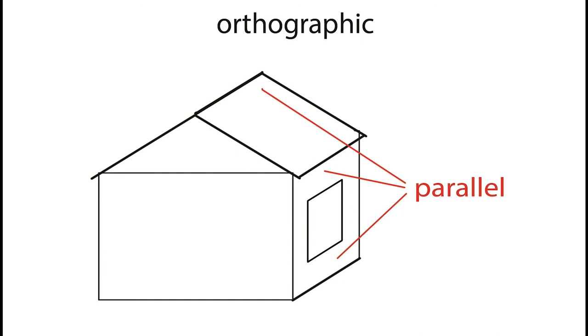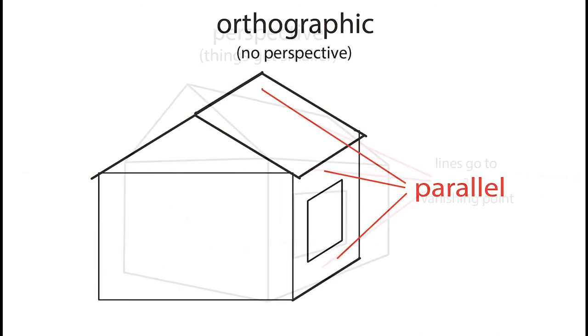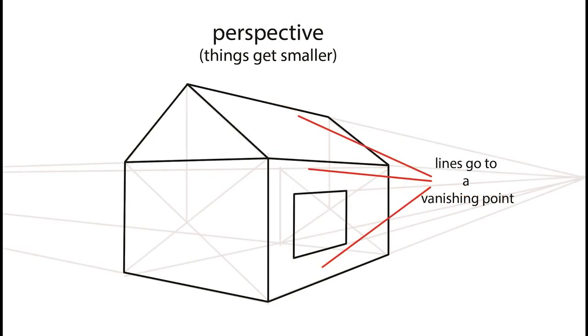That's because there's no perspective in it. Let's take a look now. If we were to use perspective, in other words things getting smaller as they move away from you, you'll see that all those parallel lines actually go to a vanishing point. They get smaller the further away that they are.